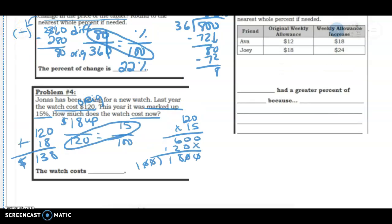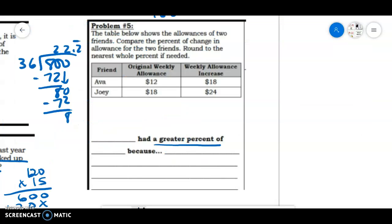Our last problem that we did is going to be about Ava and Joey, and it talks about how their weekly allowance went up. And who's went up by the most is what we're talking about here. So if we're looking for the greater percent of increase, we need to find the difference. Remember, it is always difference over original. So if I do 18 minus 12 for Ava, her difference is 6. So 6 over her original was 12. This is 1/2, which is 50%. So her allowance went up by 50%.